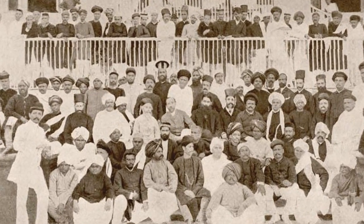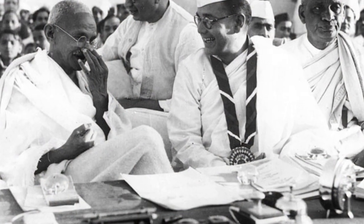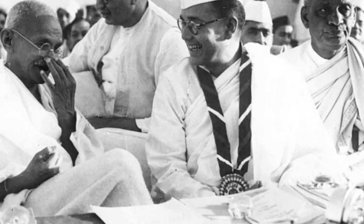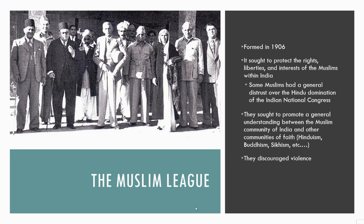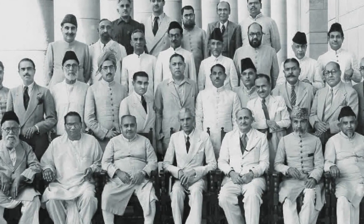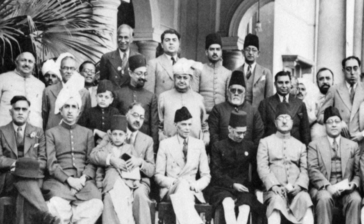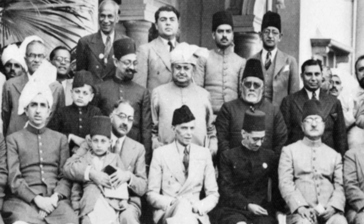Radical elements started to form within the Indian National Congress over time. But when Mahatma Gandhi came on the scene in the 1920s and 1930s, he pushed for a non-violence strategy — simple non-cooperation with items that India found to be unjust. There is another league that was formed: the Muslim League, formed in 1906. It sought to protect the rights, liberties, and interests of Muslims within India. Some Muslims had a general distrust over the Hindu domination of the Indian National Congress, and they were concerned about what would happen to the Muslim minority if independence was gained. The Muslim League sought to promote understanding between the Muslim community and other communities of faith, like Hinduism and Buddhism, and they discouraged violence.